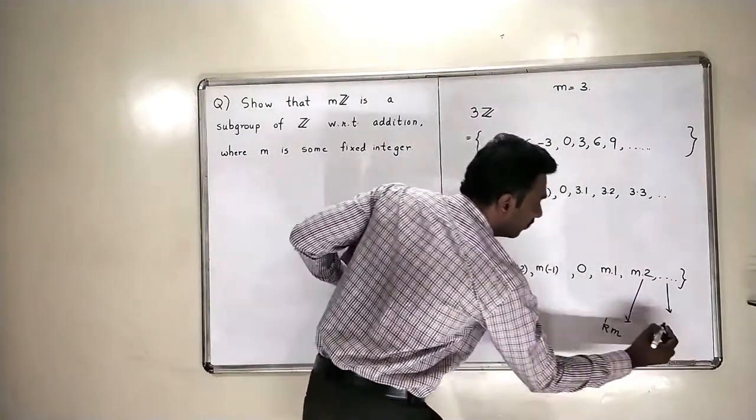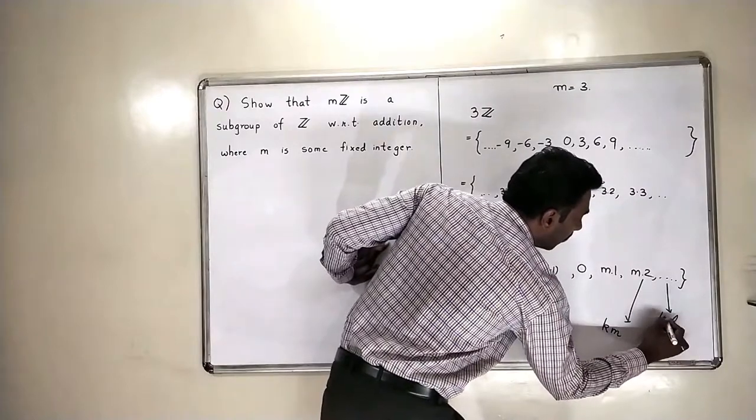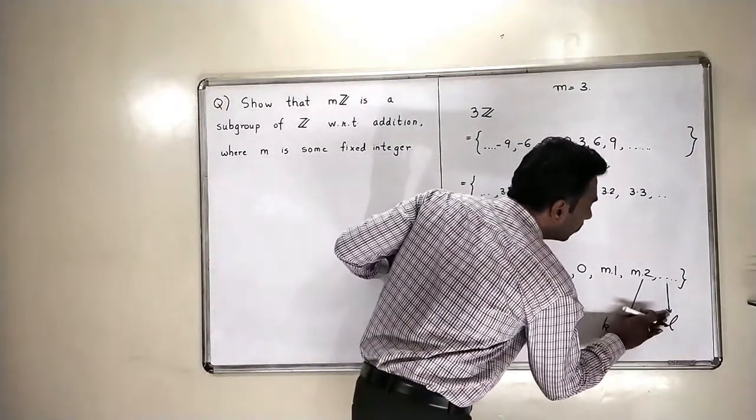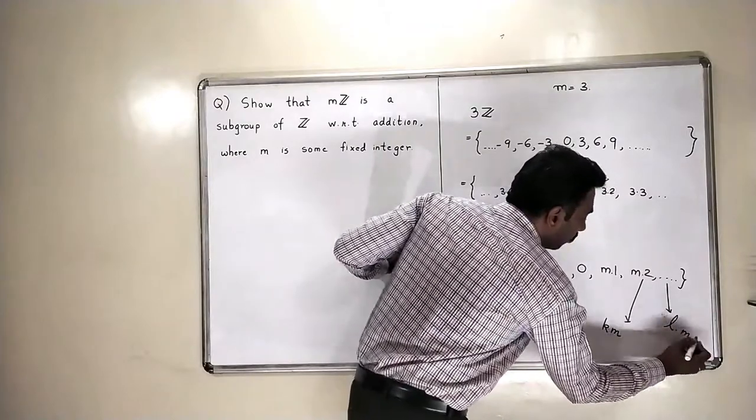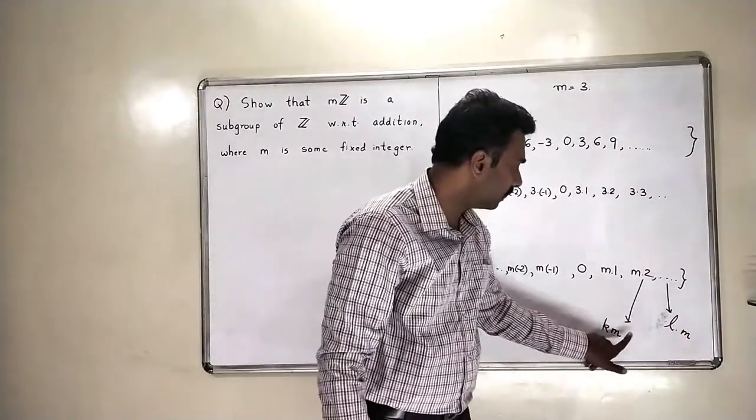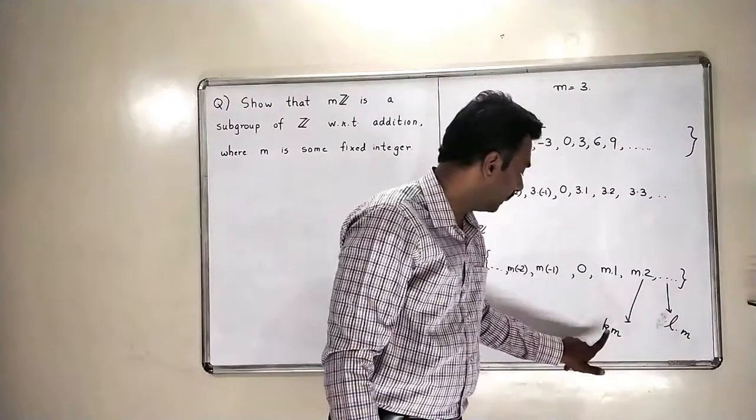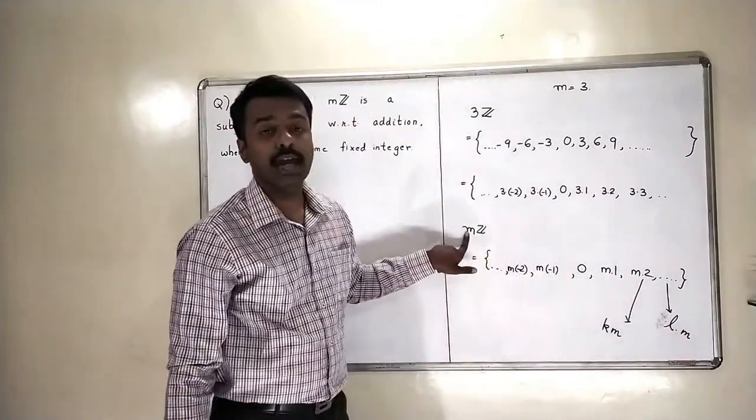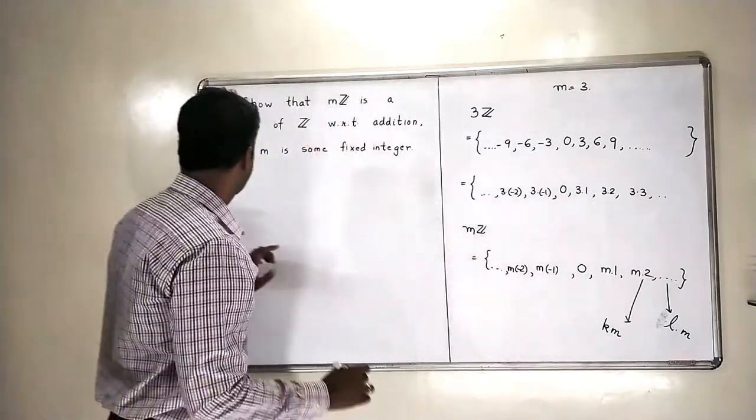And the other element of mZ will look like l times m. So, something multiplied by m, something multiplied by m. The k and l are integers and this m is our fixed integer which we have multiplied to all the elements.